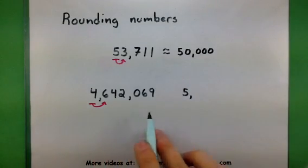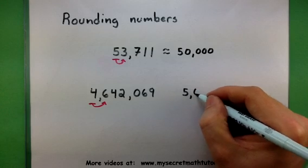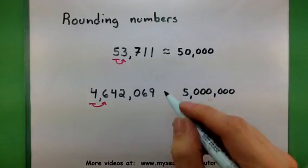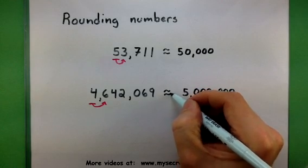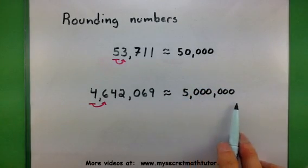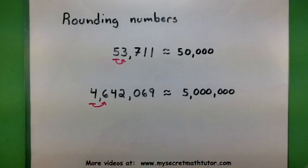Now in much the same way, all these other numbers get replaced by a 0. This is known as rounding up because the new number I have just formed, 5 million, is larger than my original one.